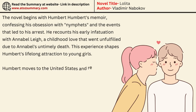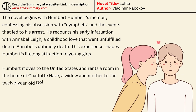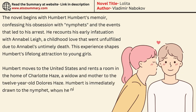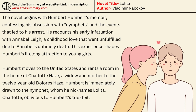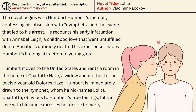Humbert moves to the United States and rents a room in the home of Charlotte Hayes, a widow and mother to the 12-year-old Dolores Hayes. Humbert is immediately drawn to the nymphette, whom he nicknames Lolita. Charlotte, oblivious to Humbert's true feelings, falls in love with him and expresses her desire to marry.